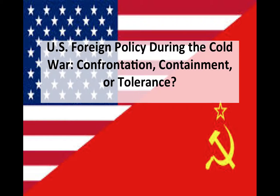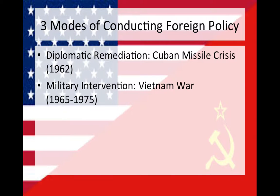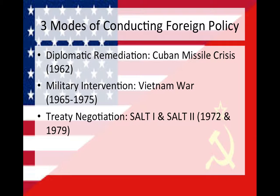This video will highlight several areas of the world where two competing ideologies, liberal democracy, championed by the United States and its Western allies, and socialism, supported by the Soviet Union and its satellite states, came into conflict. The focus of the next minutes will illustrate several means that the US conducts its foreign policy with. We'll focus on diplomatic remediation, military employment, and treaty negotiation in this video. Remember, these are just three elements the US can use to conduct foreign policy.